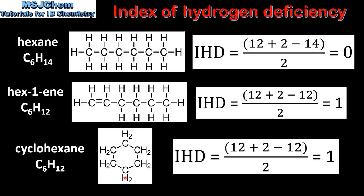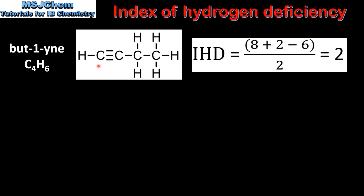In our last example we look at but-1-yne, which is an alkyne with a carbon to carbon triple bond. The index of hydrogen deficiency is (8 + 2 − 6) ÷ 2, which gives us a value of 2. This is because the molecule has a carbon to carbon triple bond.